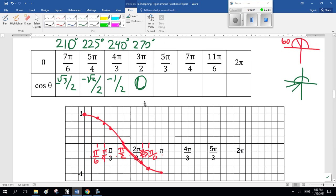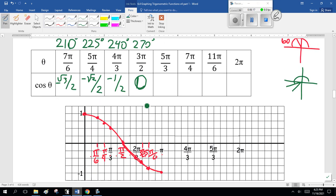7 pi over 6, that would be there. It should be minus root 3 over 2, or 0.86, something like here. 4 pi over 3 is minus a half. Halfway in between is 5 pi over 4, and that's 0.7, something like that. So it curves up like this. Now, 3 pi over 2, or 18 pi over 6, would be right there. So try to draw a smooth curve like that.